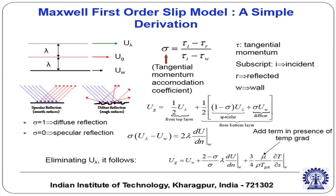The value of sigma is between 0 and 1. For specular reflection, when τ_i equals τ_r — the incident tangential momentum is the same as the reflected tangential momentum — sigma equals 0. On the other hand, for diffuse reflection, the reflected molecules assume the tangential momentum of the wall, so τ_r equals τ_wall, making sigma equal to 1. In reality, it is neither fully specular nor fully diffuse reflection, because the relative proportion of these depends on the condition of the surface.